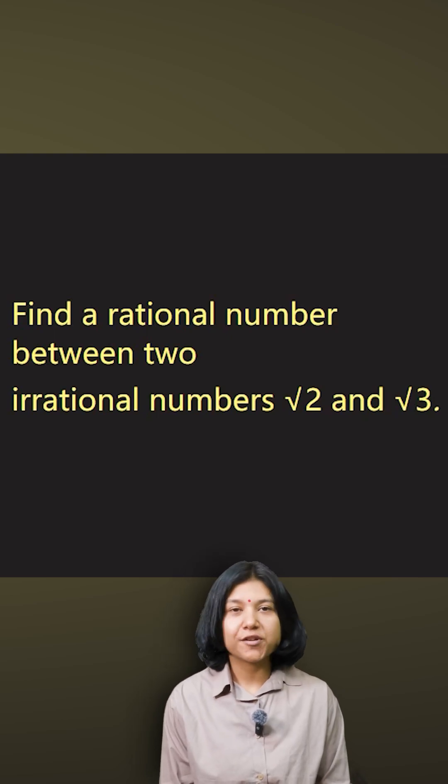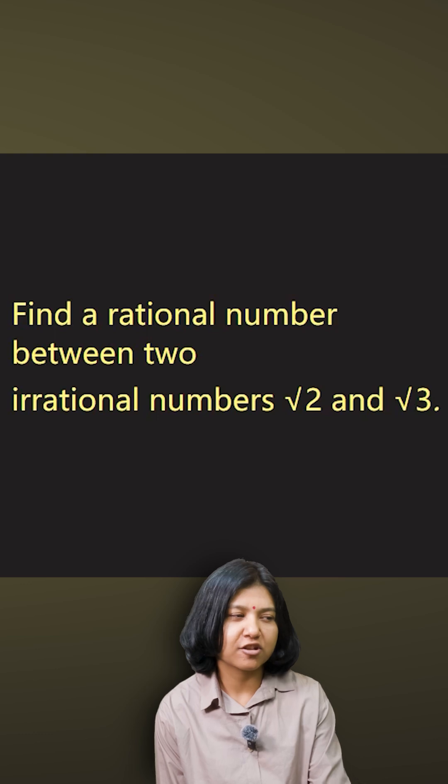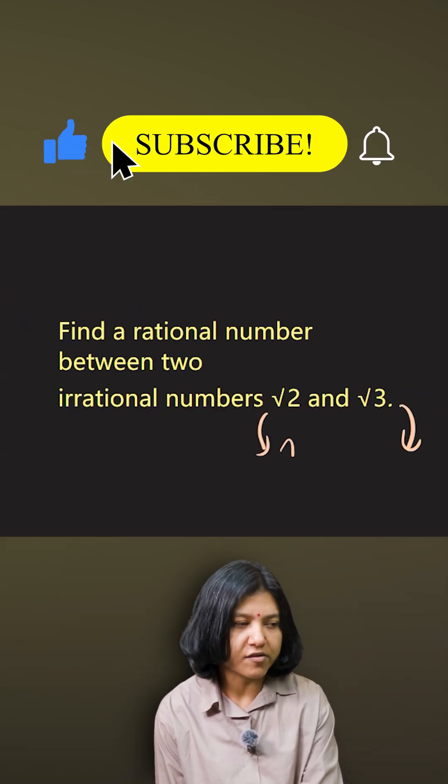Finding a rational number between two irrational numbers can be done by taking the square of the two irrational numbers, because that will give you a rational result. So √2 when squared gives me 2, and √3 upon squaring gives me 3.